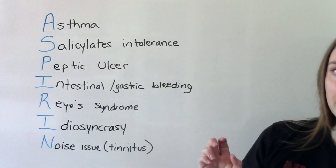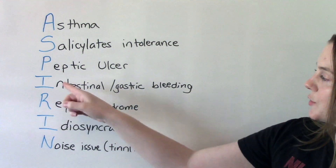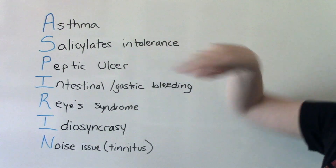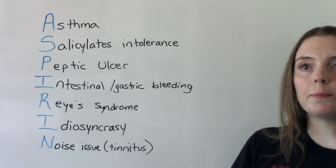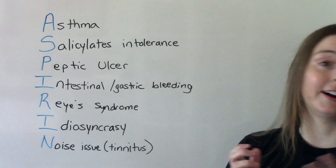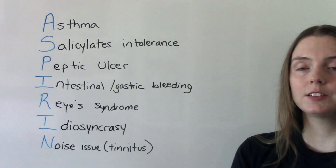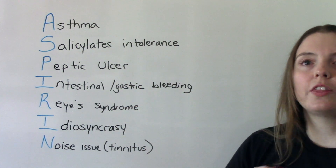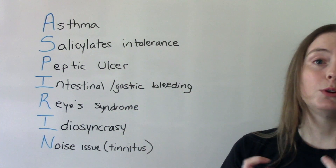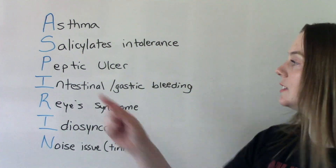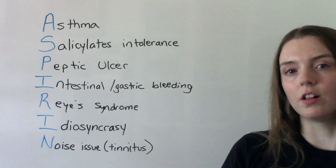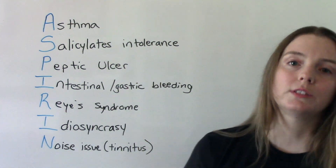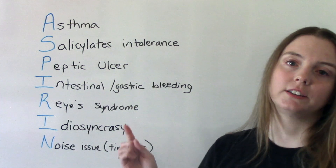P is for peptic ulcer development, and I is for intestinal or gastric bleeding. These two kind of go together because they're similar. Unfortunately, this is one of the main reasons people are against the use of aspirin — they have that connection between these bleeds. Aspirin negatively affects the mucosa, which can cause ulcerations and bleeds. Some people are more at risk than others, but we have to be careful because these are potential things that could happen.